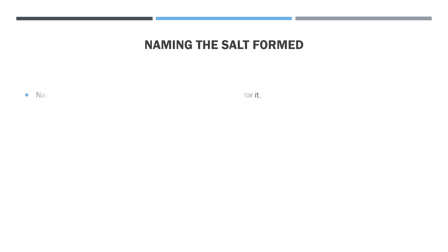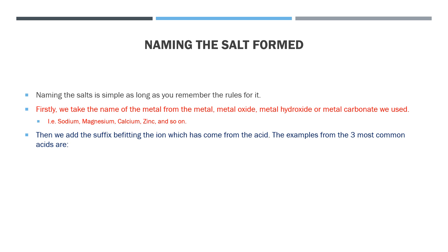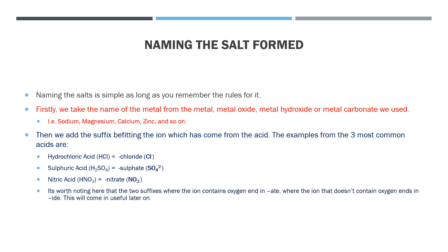Next up, let's name the salts that we make. Naming salts is pretty easy as long as the rules are followed. Firstly, we take the name of the metal we had in the base — for example, sodium, calcium, magnesium. Then we take the appropriate suffix from the type of acid we used. Using the three main acids discussed in earlier videos: for hydrochloric acid we have the suffix chloride; for sulfuric acid we have the suffix sulfate; and for nitric acid we have the suffix nitrate. It's worth noting that chloride ends in "-ide" and contains no oxygen, whereas the other two end in "-ate" and do contain oxygen. For example, if barium hydroxide and sulfuric acid react together, we can predict the salt formed will be barium sulfate. These rules extend even to weaker acids and different bases.